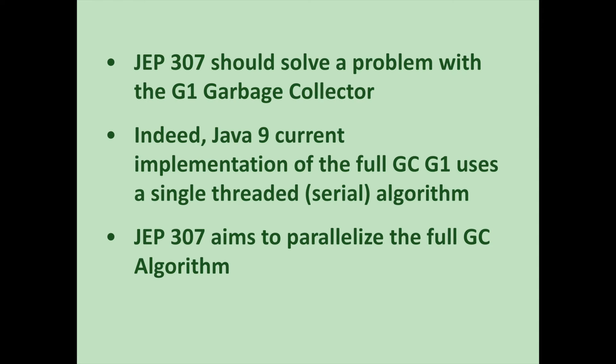JEP 307 solves a problem with the G1 garbage collector. As of Java 9, the current implementation of the full garbage collector for G1 uses a single-threaded, serial algorithm. This means that if G1 ever has to fall back to a full GC, then a nasty performance shock awaits. The aim of JEP 307 is to parallelize the full GC algorithm so that in the unlikely event of a G1 full garbage collection, the same number of threads can be used as in the concurrent collections.